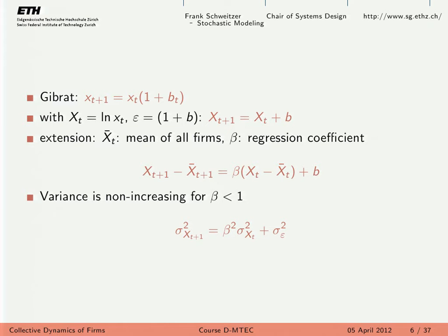You can understand this by thinking about economies of scale: at some point it doesn't make sense to hire more people because revenue is not increasing proportionally. If there is a marginal revenue going to zero, why should you extend your business? So how was this built into the model? Here's the Gibrat dynamics — they took the logarithm, so capital X means log of small x, and included a growth rate term with (1+b).